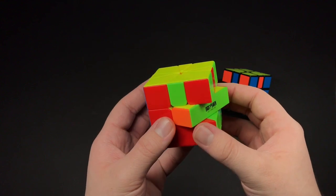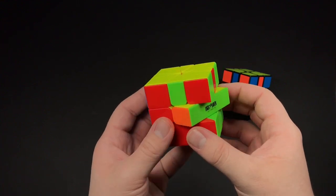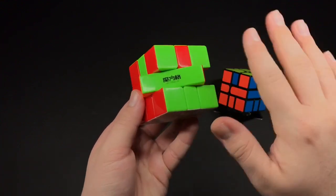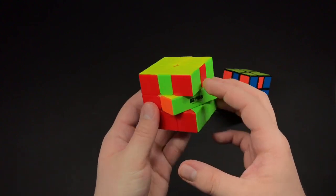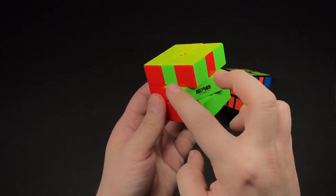Okay, so this is the parity that I'm looking at today. The whole cube is solved except for these two adjacent edges.